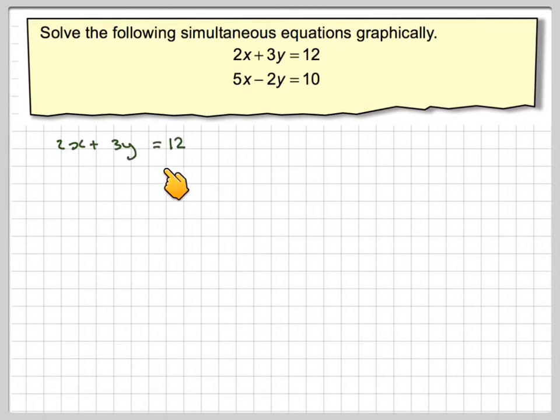For 2x plus 3y equals 12, if we take the x-axis and put y equals 0, then we have 2x plus 3 times y, which is now 0, so 3 times 0 equals 12.